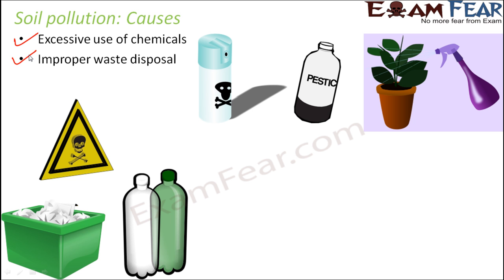Improper waste disposal is another cause. Disposing of non-biodegradable wastes like plastics — plastic bottles, plastic papers, polythene bags — onto the soil causes soil pollution because many organisms live in the soil. Sometimes those organisms might eat tiny bits of plastic, which chokes them and causes their death. So plastics should be an absolute no-no if we want to prevent soil pollution.